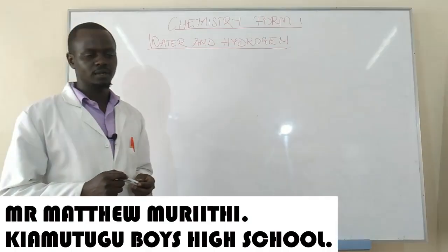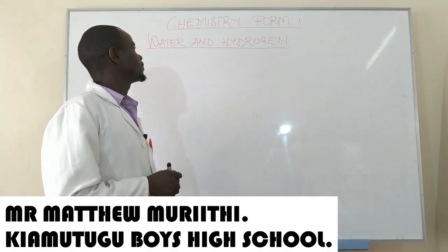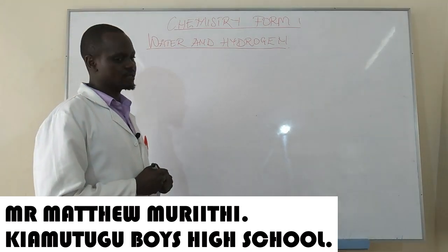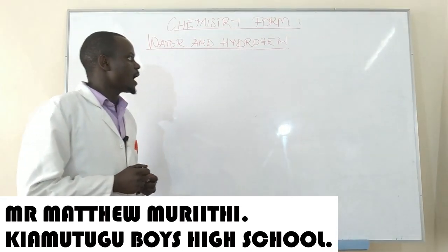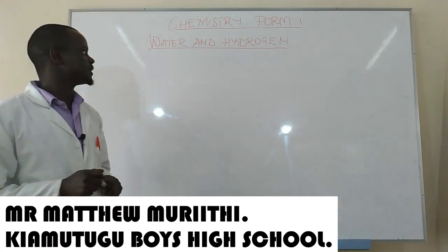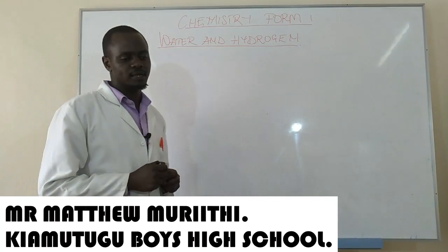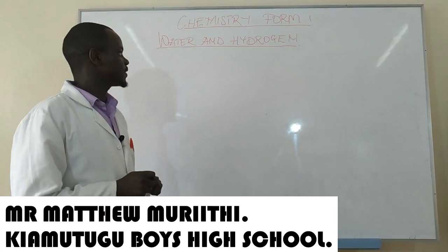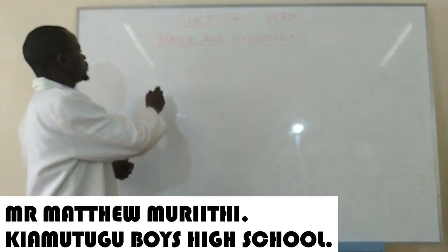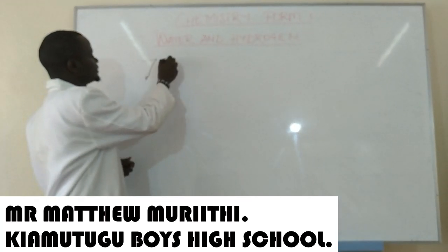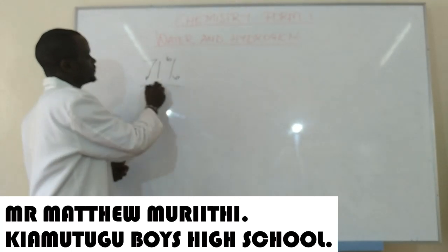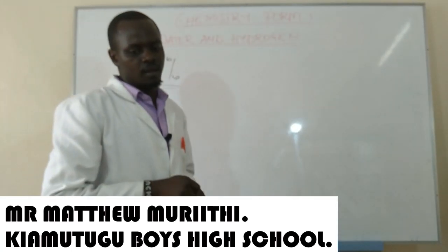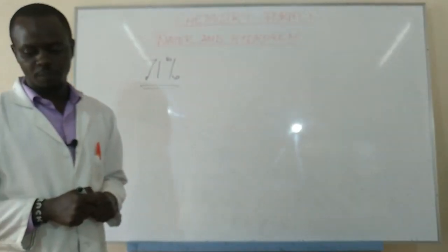Greetings learners, and welcome to this session on Chemistry Form One. We are going to be dealing with water and hydrogen. First of all, we want to say that water is the most abundant substance on the earth, occupying about 71 percent of the total space of the earth.